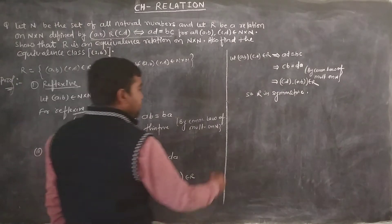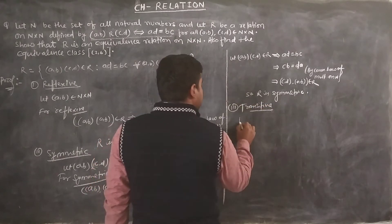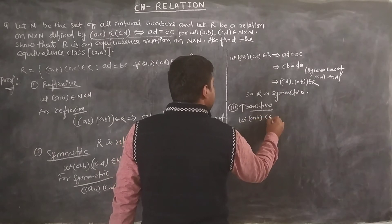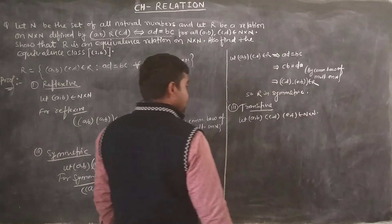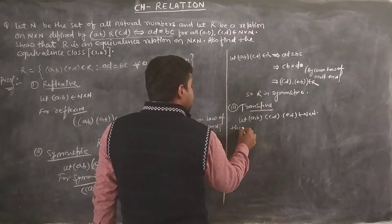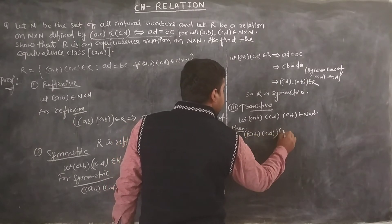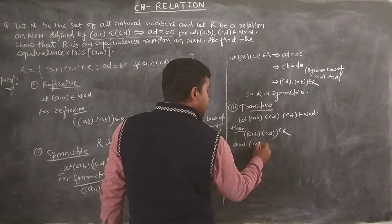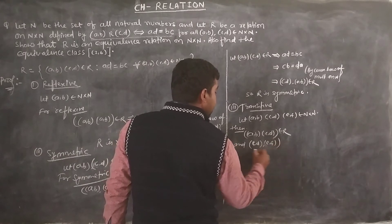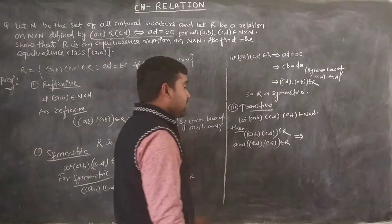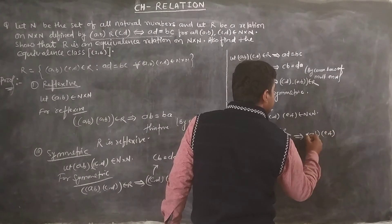Now we check transitive. For transitive, let (a,b), (c,d) and (e,f) belong to N×N. Suppose (a,b) R (c,d) belongs to R and (c,d) R (e,f) belongs to R. We need to show that (a,b) R (e,f) belongs to R.